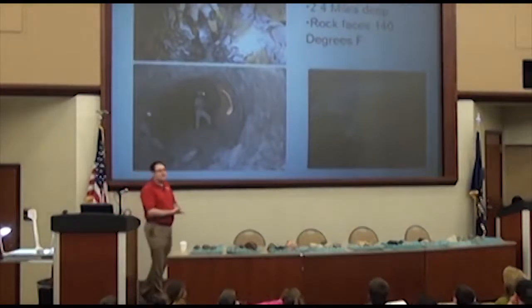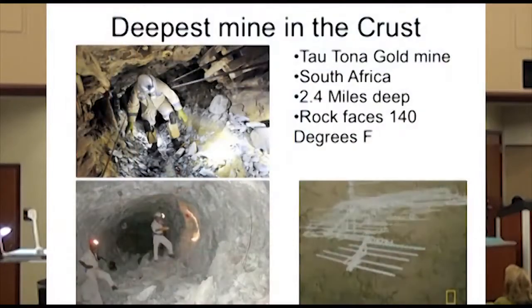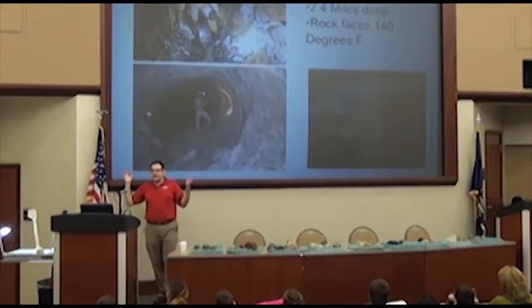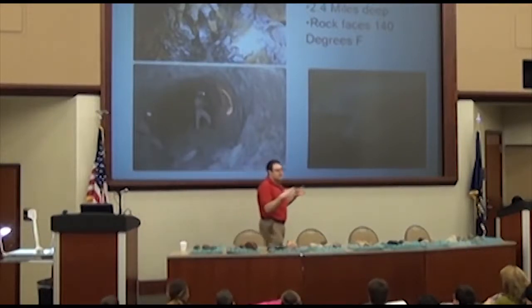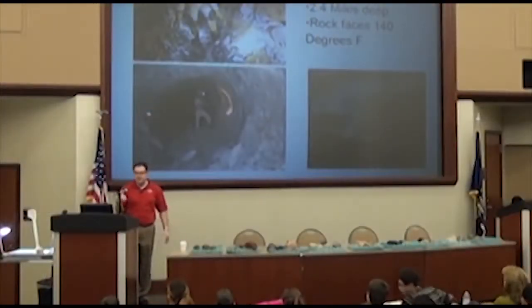The deepest mine on the planet is the Tautana Gold Mine in South Africa — 2.4 miles deep — which is nothing when you think about how huge the Earth is. It is so deep that the mantle, the inner hot part of the Earth, is heating up the walls of the mine. It's 140 degrees Fahrenheit on the walls, so the workers have to wear crazy suits so they don't burn themselves just touching the wall. But to put it into perspective, it's nothing compared to the depth of the Earth, and that's as far down as we've ever gone.